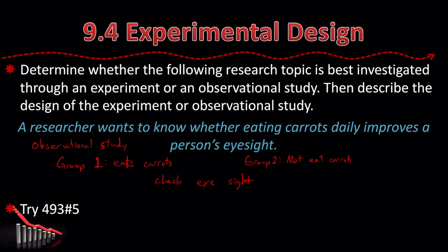The answer to number five should be observational. You randomly choose one group of people who smoke and another group who don't smoke, and then find the body mass index of people in both groups.